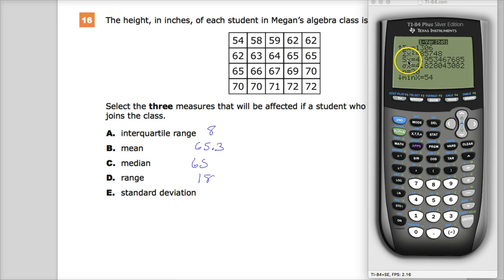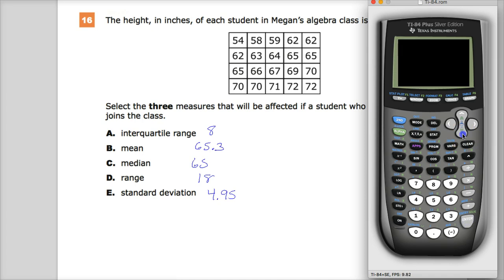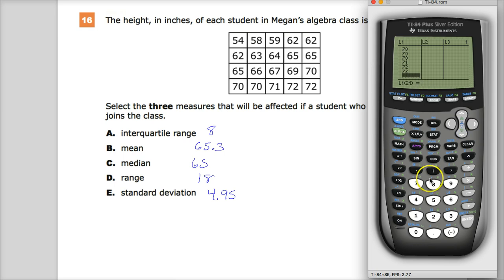Now this Sx here is the standard deviation of the sample, and since we're picking Megan's algebra class only, we can use that value. The one below it would be the population standard deviation. So standard deviation is 4.95, something like that. Now that I have that, I can go back to the list, and in the 21st spot I can put in the new student, 77.